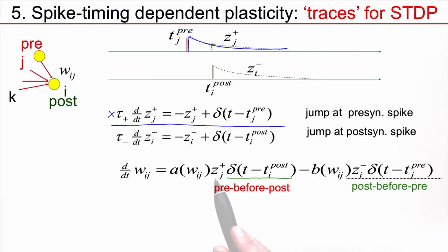And the amount of weight change is directly proportional to the momentary value of this variable z_j^+. Now, the actual jump in the weight depends on a parameter a, which, in addition, may depend on the weight itself. So, this accounts for the sequence pre-before-post.